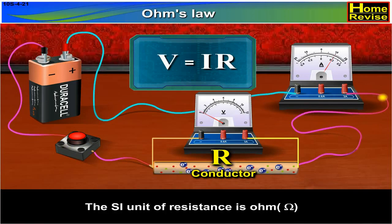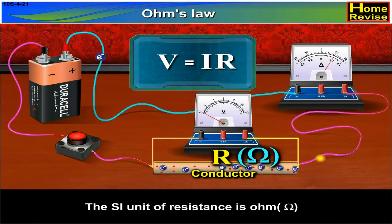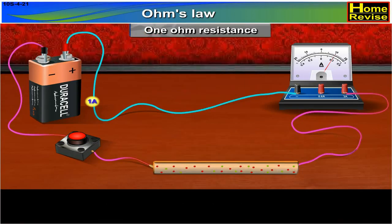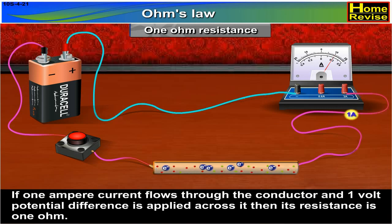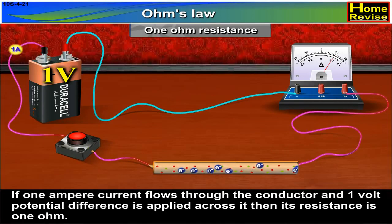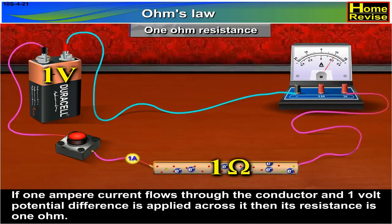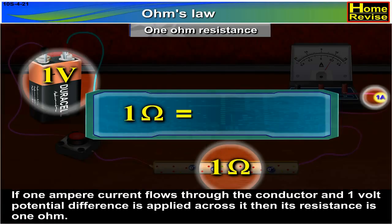The SI unit of resistance is Ohm. 1 Ohm resistance: If 1 ampere current flows through the conductor and 1 volt potential difference is applied across it, then its resistance is 1 Ohm. 1 Ohm is equal to 1 volt upon 1 ampere.